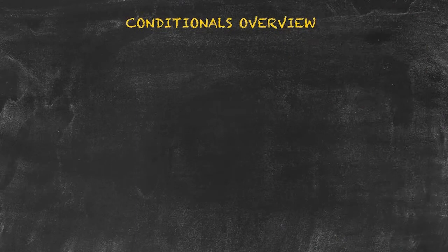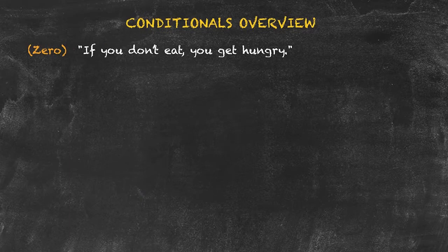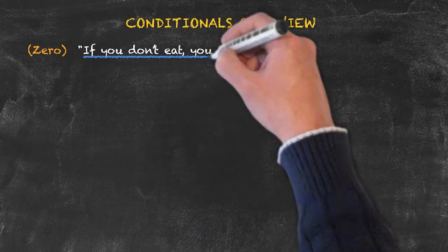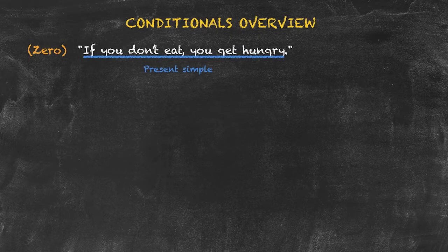Let's briefly review the conditionals we've learned. In our first example sentence: 'if you don't eat, you get hungry.' This is the zero conditional. Both clauses — 'if you don't eat' and 'you get hungry' — are in the present tense. The zero conditional is used to express facts or general truths: not on any one particular occasion, but generally.